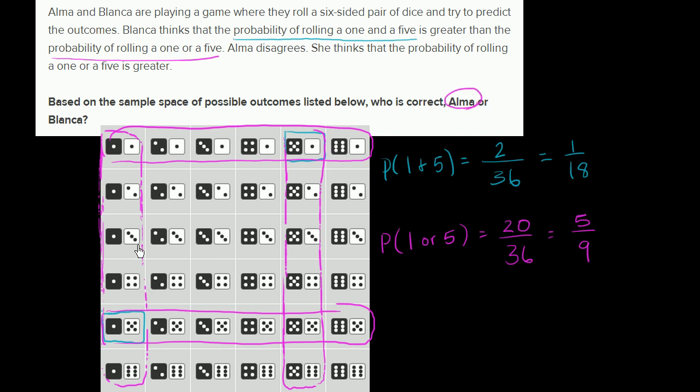Now, it was good to go through this exercise of identifying the subset of our sample space that meets each of these situations. But you could have just thought about it as well, even if you didn't have the sample space in front of you. What Blanca was saying, the probability of a one and a five - you have to have a one and a five - that's a much more stringent constraint than a one or a five. A one or a five is going to include many more things. It's going to include a two and a one, a three and a one. It's going to include a five and a three, not just a five and a one.